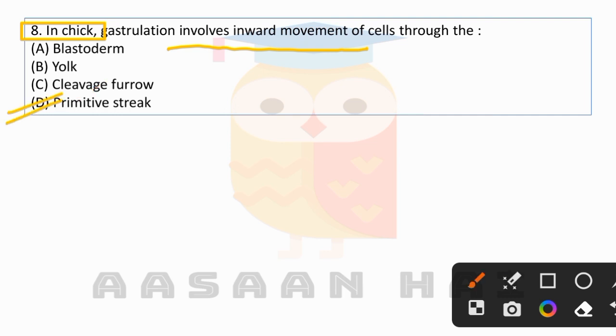In chick, gastrulation occurs through the primitive streak. This is formed on the posterior side of the embryo.